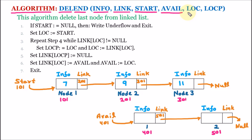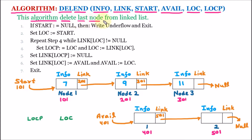We also have LOC, which is the location pointer, and LOCP, which is the location previous pointer. This algorithm will delete the last node from the linked list. In our linked list, node 3 is the last node, so that is the node we are going to delete.